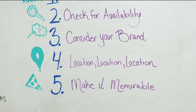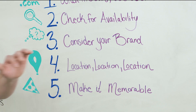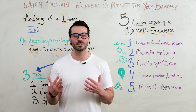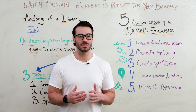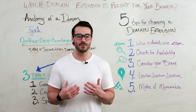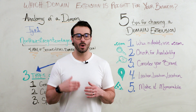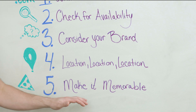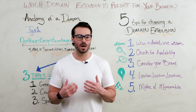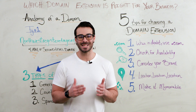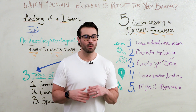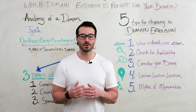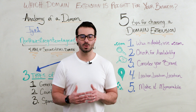Our next tip is all about location. Country code top level domains are country and location specific. Businesses can use these to target certain areas and let visitors know where they are located and what areas they serve. The last tip is to make it memorable. While .com is the most common, others that entrepreneurs tend to favor include .co, which is unique without losing connection to .com. Bloggers, authors, and other creatives also tend to use .me.